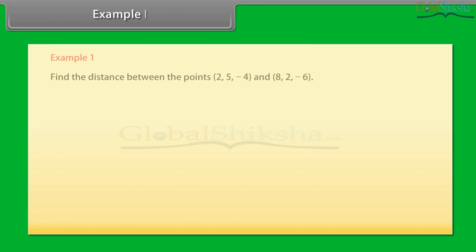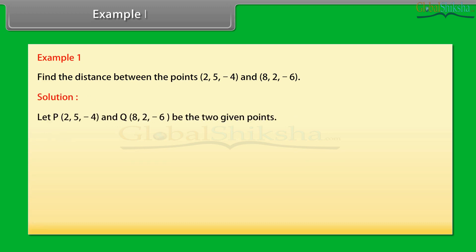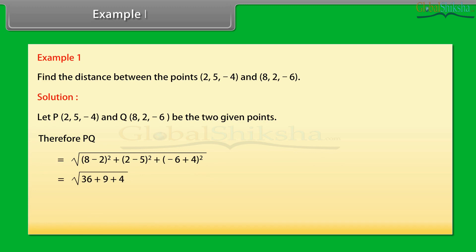Example 1: find the distance between the points (2, 5, −4) and (8, 2, −6). Solution: let P = (2, 5, −4) and Q = (8, 2, −6) be the two given points. Therefore, PQ = √[(8−2)² + (2−5)² + (−6+4)²] = √[36 + 9 + 4] = √49 = 7.